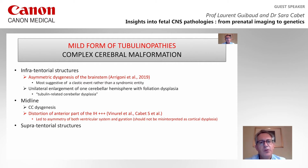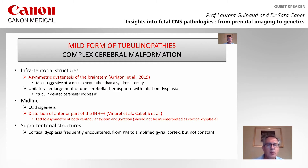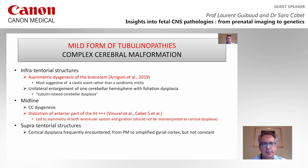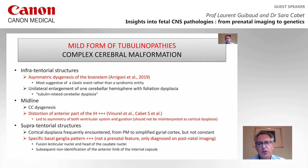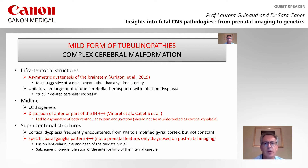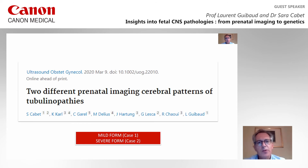The distortions of the anterior part of the interhemispheric fissure is more specific and leads to asymmetry of both sulcation pattern and gyration, and should not be misinterpreted as cortical dysplasia. Cortical dysplasia are frequently encountered but not constant, and can range from polymicrogyria to simplified gyral cortex. The more specific feature, only diagnosed on postnatal imaging, is the fusion between lenticular nuclei and head of the caudate nuclei with subsequent non-identification of the anterior limb of the internal capsule.